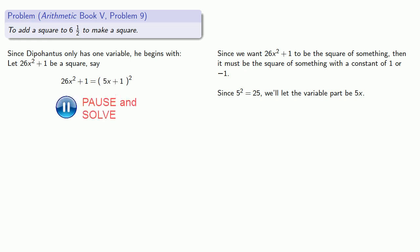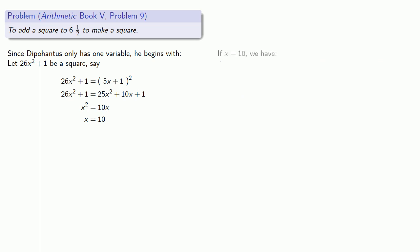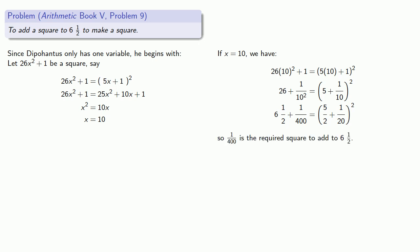And we can solve. If x is equal to 10, then we know that 26 times 10 squared plus 1 equals 5 times 10 plus 1 squared. Now we actually wanted to add something to 6 and a half, but that's okay, we can work our way back to 6 and a half. And so 6 and a half plus the square 1/4 hundredth gives us a square, 5 halves plus 1/20th. And so 1/4 hundredth is the required square to add to 6 and a half.